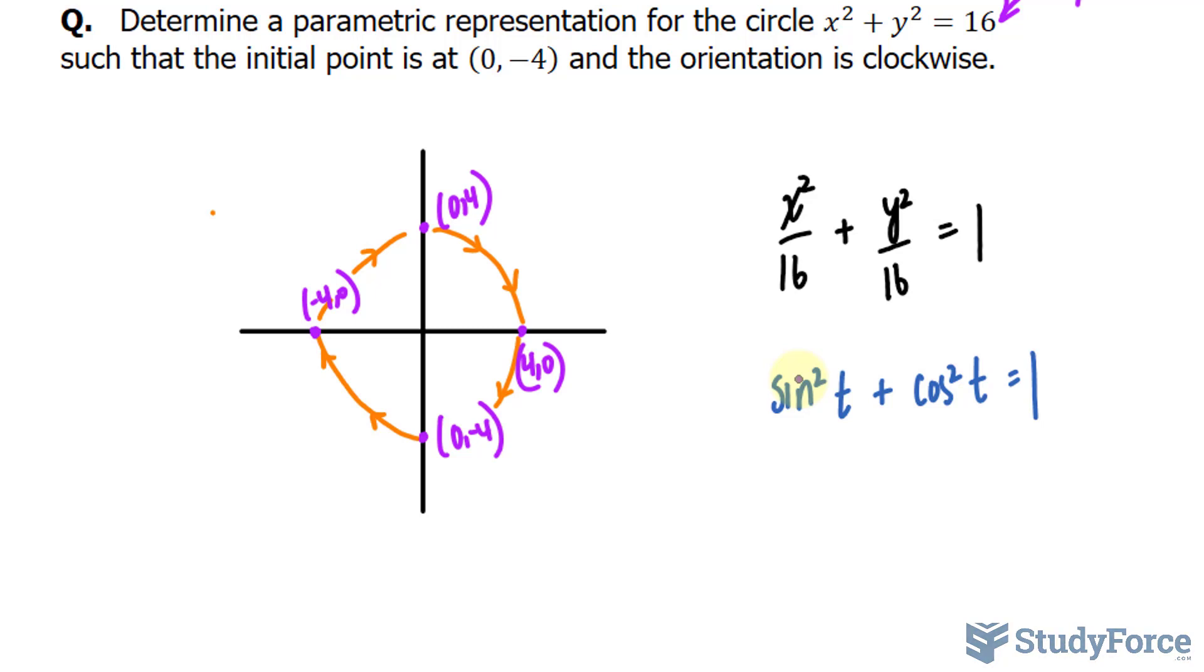If the initial point lies on the y-axis, which it does for our example, we use the substitution where the sine squared t is equal to the x term, and the cosine squared t is equal to the y term. If it does not start on the y-axis, but it starts on the x-axis, the opposite is true, where x-squared term is equal to the cosine and the y-squared term is equal to the sine.